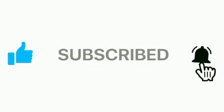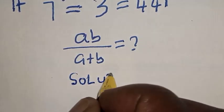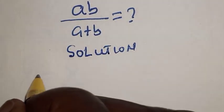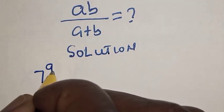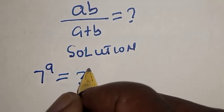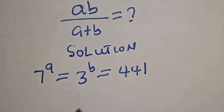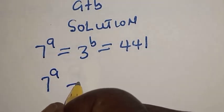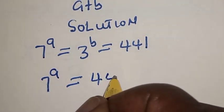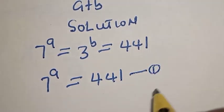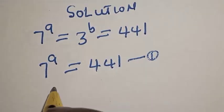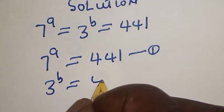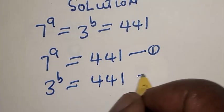Solution. We have 7 raised to power a is equal to 3 raised to power b is equal to 441. Now, 7 raised to power a is equal to 441 — this is equation 1. And also, 3 raised to power b is equal to 441 — this is equation 2.